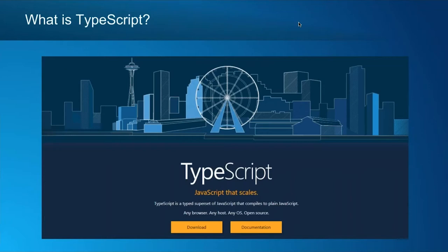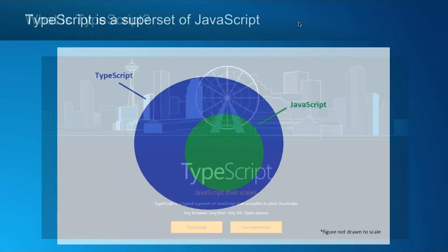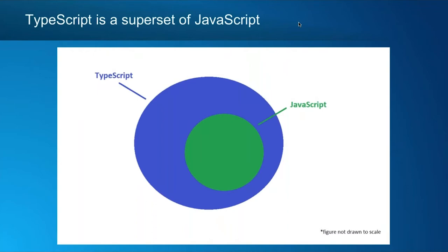TypeScript is an open source programming language that is a superset of JavaScript. It adds optional static typing, enhanced IDE support, and compiles down to plain JavaScript. Being a superset means that valid JavaScript code is valid TypeScript code. You could almost rename your JavaScript files to TypeScript files — just replace the .js with a .ts. TypeScript code looks a lot like JavaScript code; there are a few differences, but they're largely the same.